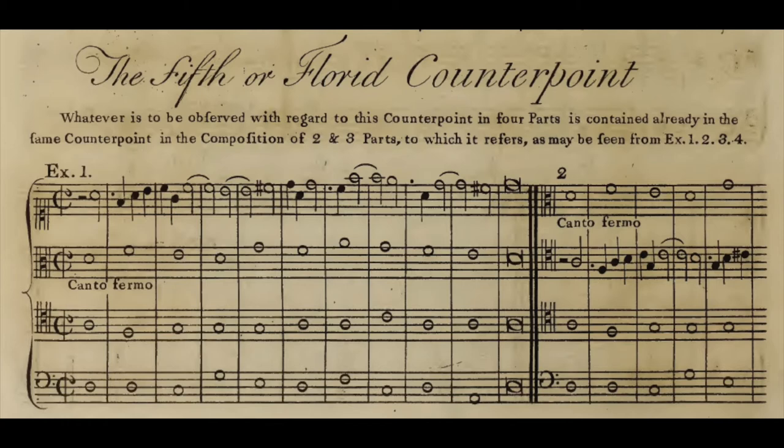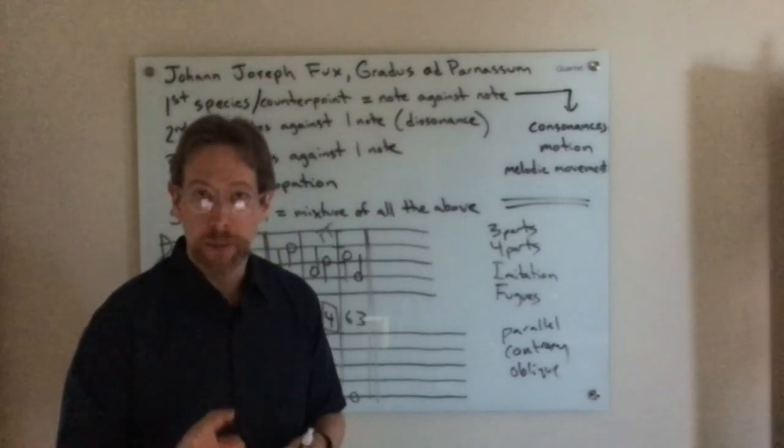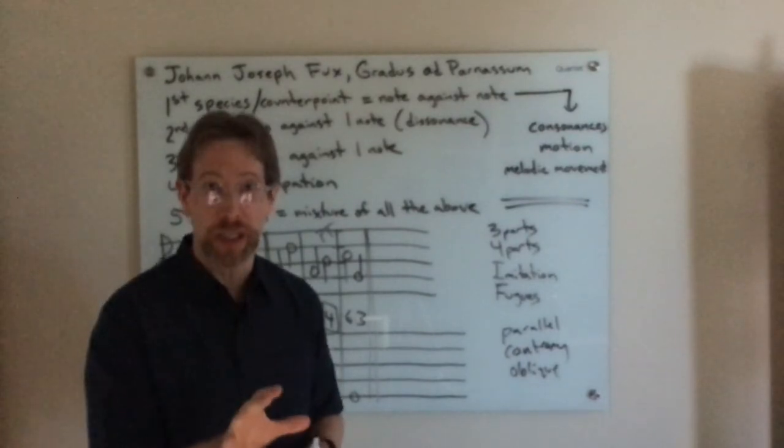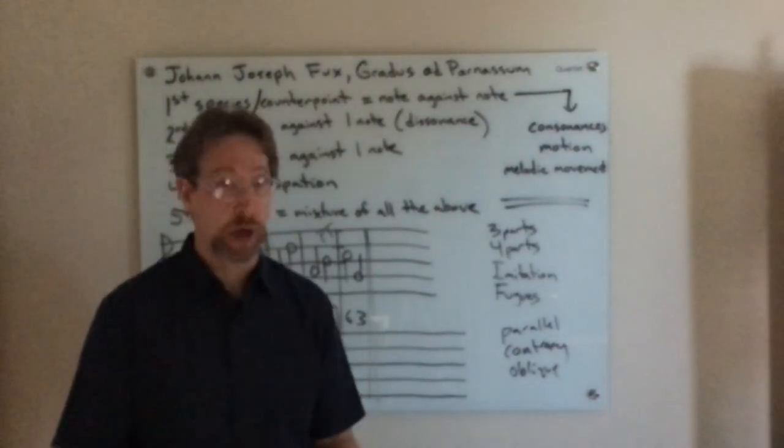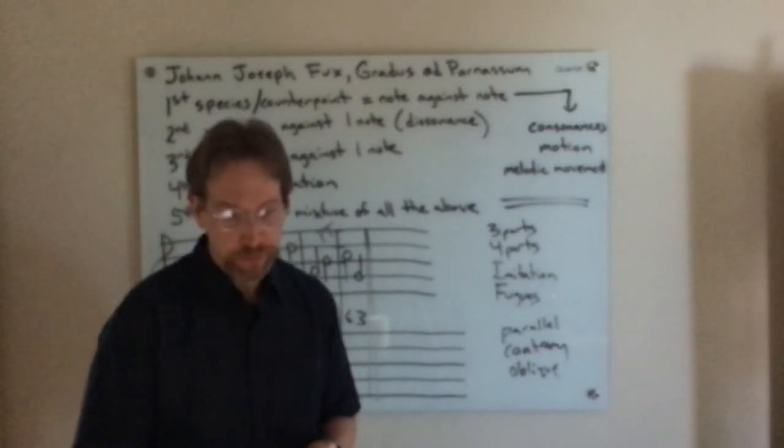I'm going to show you this photo here of what a page from Fux's counterpoint would actually look like. So this would be an example of fifth or florid counterpoint. And if we look at this example here, you can see that we have whole notes in all the bottom three parts. And then we have a combination of half notes, whole notes, quarter notes, and various note values. So we can see what that might look like. All this is going to be important. So stick with me, because the question is, how does this Fuchsian counterpoint relate to the music of Mozart? How is it of practical use? So we're going to get there.